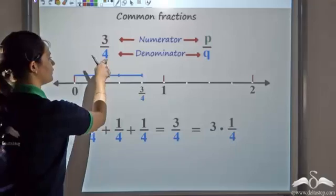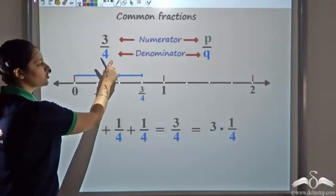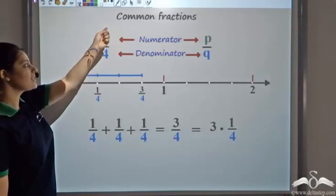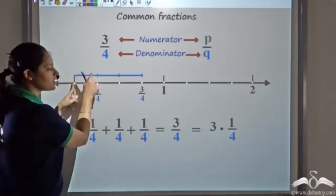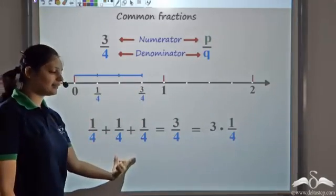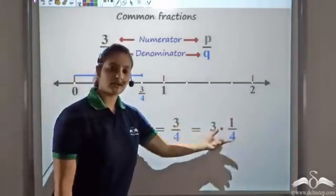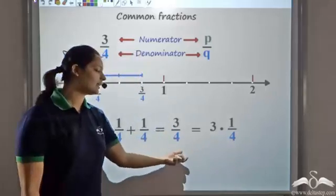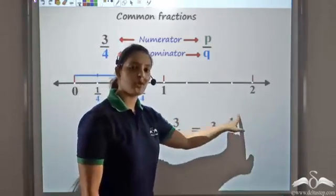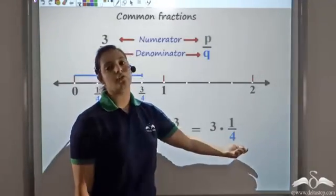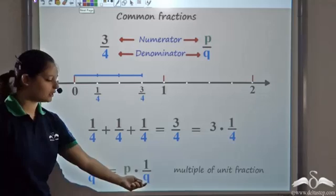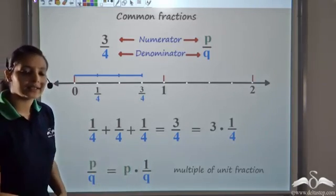So I have this common fraction three by four, where three is the numerator and four is the denominator. Now what does three by four tell me? The denominator indicates how many divisions this unit length should have — that is four: one, two, three, four. So I divide the unit length into four equal parts. Three indicates the number of such units: one, two, three. So three of such units gives me three by four. One by four added three times — that is three times one by four, the repeated addition of one by four — is three by four. So we realize that a common fraction is nothing but a multiple of a unit fraction. The common fraction p by q would be p times one by q, which is a unit fraction.